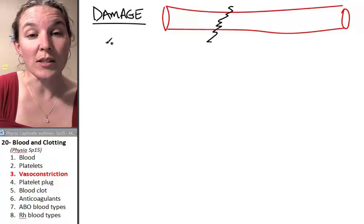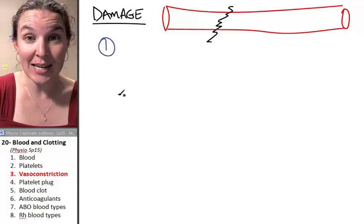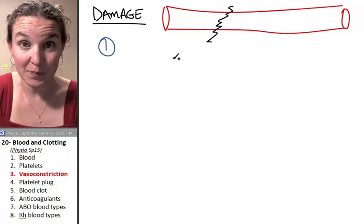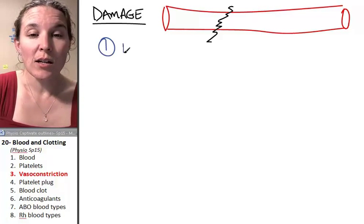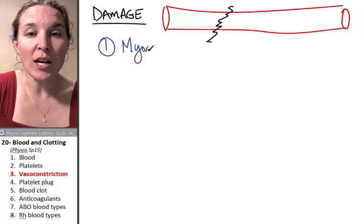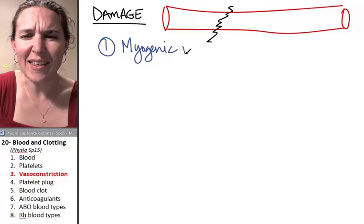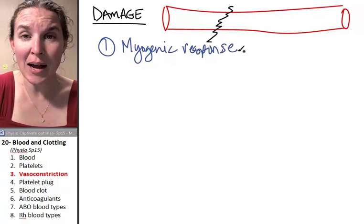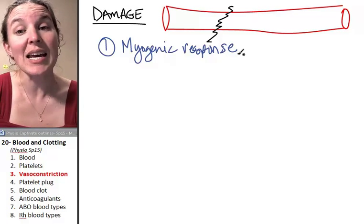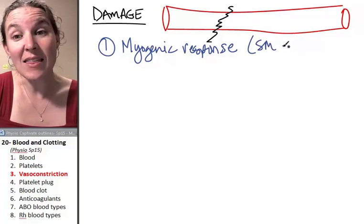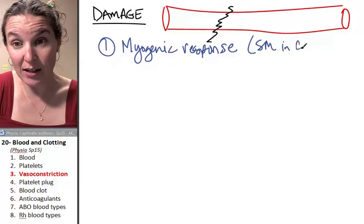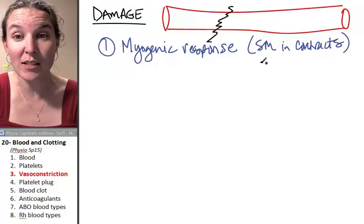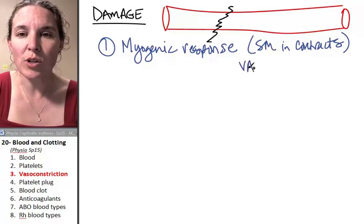So one of the responses upon damage is that the vessel itself, the damaged vessel, experiences a myogenic response. What is that? We've talked about this. We've seen a myogenic response in the past. It's when the smooth muscle in the vessel contracts. And what's the result of smooth muscle contraction in a blood vessel? Vasoconstriction.